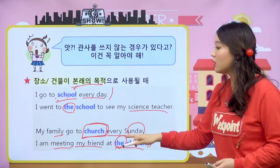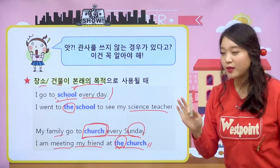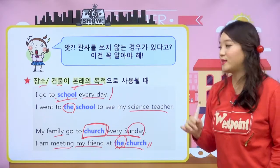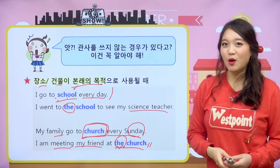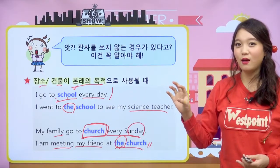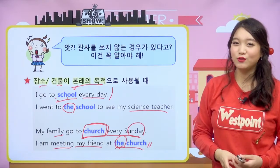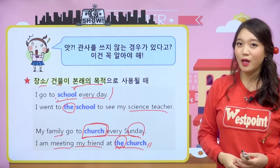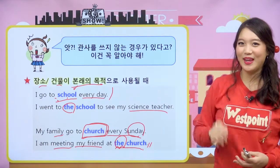장소나 건물이 본래의 목적일 때는 관사가 사용되지 않고, 그렇지 않을 경우에는 관사가 오기도 한다는 거 기억해 주세요. 오늘 명사의 형제인 관사에 대해서 살펴봤는데 관사 두 가지, 부정관사와 정관사이렇게 있었는데 별로 어려운 내용은 아니었어요. 우리 친구들 복습 잘 하시고 여러 가지 케이스들을 잘 기억한다면 관사 마스터 할 수 있을 거예요. 우리는 다음 시간에 다시 만나요. Bye bye everyone. I'll see you next time.